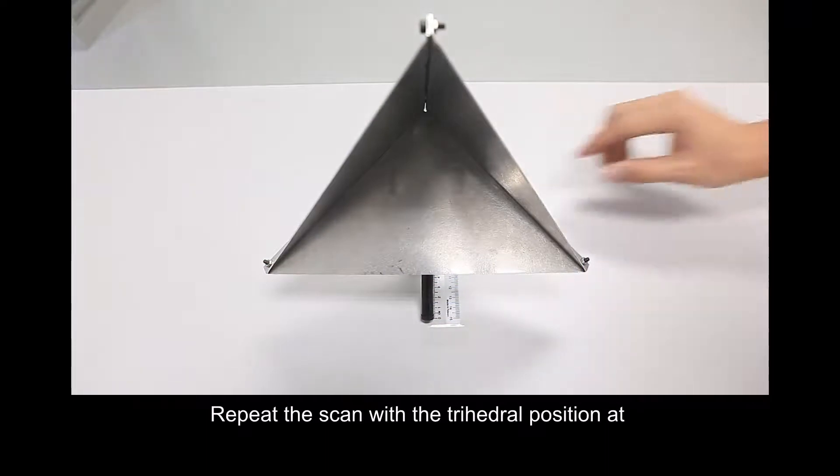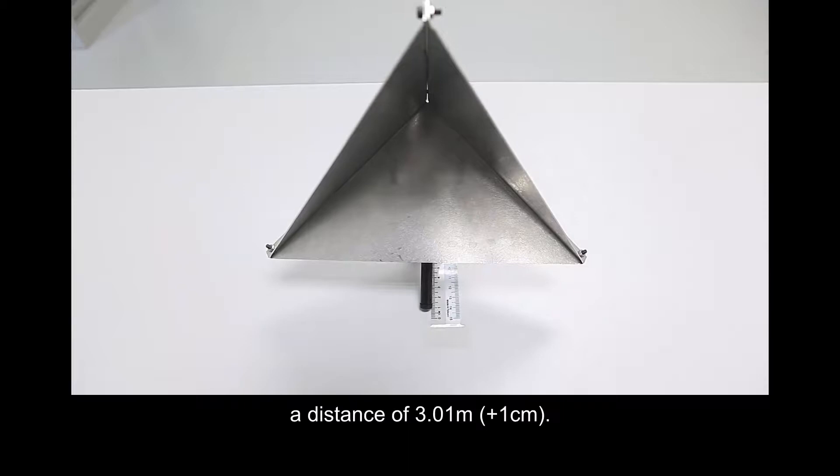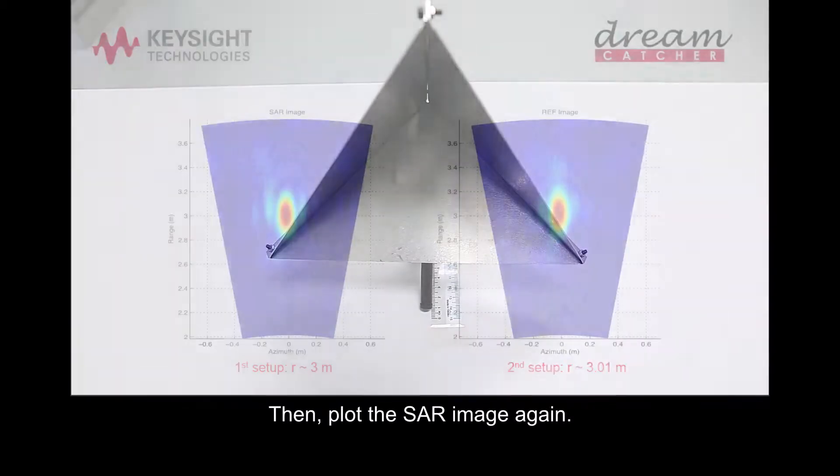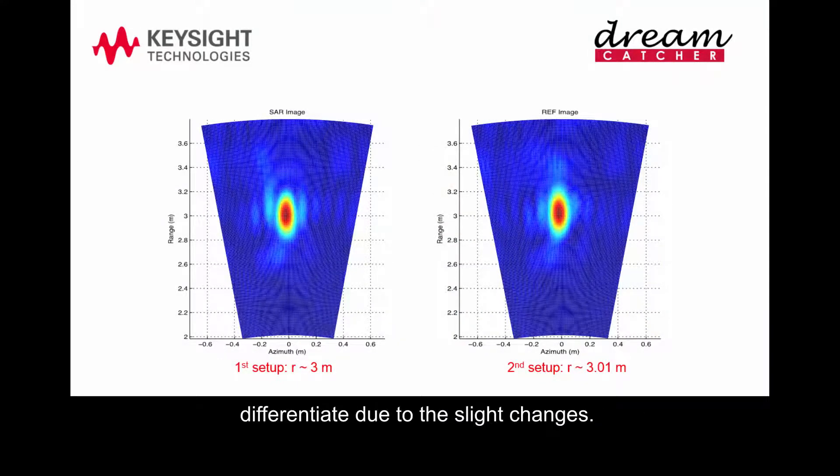Repeat the scan with the trihedral position at a distance of 3.01 meters, plus 1 centimeter. Then plot the SAR image again. The difference of both the SAR images is hard to differentiate due to the slight changes.